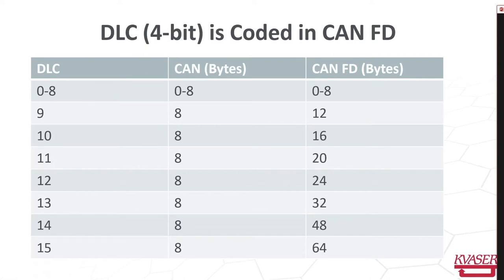The DLC is only four bits. For zero to eight, the DLC value is exactly the number of bytes in the package. If you have higher numbers nine to 15 in classical CAN, that will still be eight bytes — you can never send more than eight bytes. In CAN FD, nine means you have sent 12 bytes, and 10 means 16 bytes, and so forth as shown in a table. This means if you want to send 13 bytes, you have to extend it to 16 bytes, because you can only send certain fixed byte counts in a CAN FD frame.